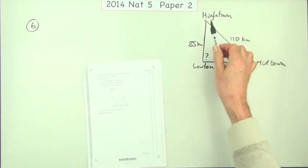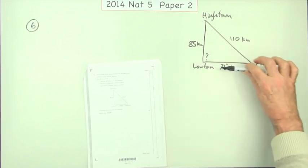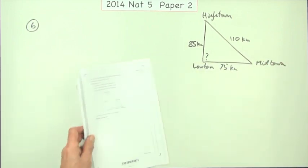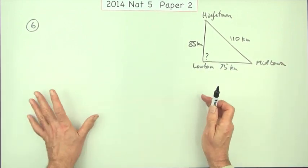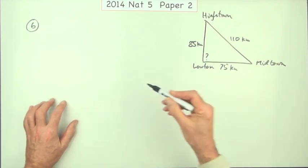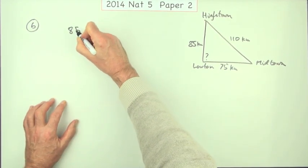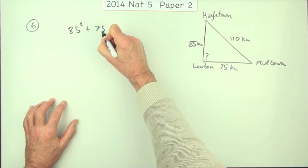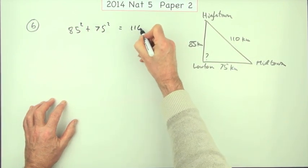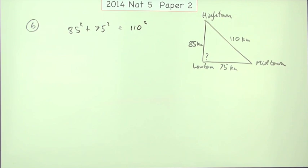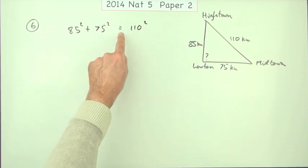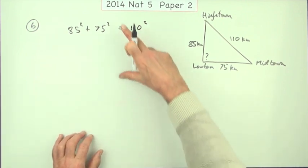If that's north, if that line goes north-south, that line's east-west, that should be a right angle. Is it? So it's obviously Pythagoras you could be doing but don't set it out like a standard Pythagoras. Don't say 85 squared and 75 squared should give me that 110 squared and then see if it's true or not because you don't know if that statement's correct. That's not the way to set it out.